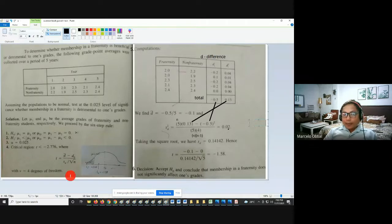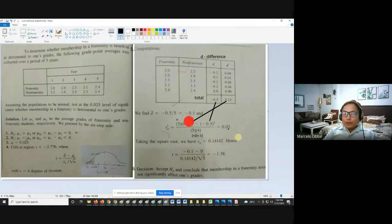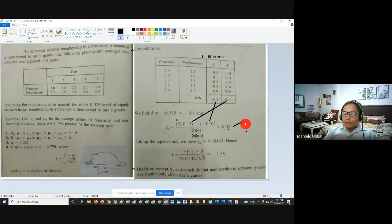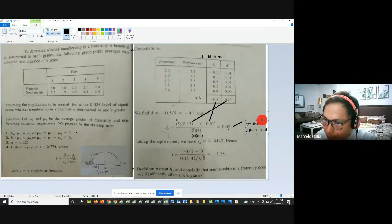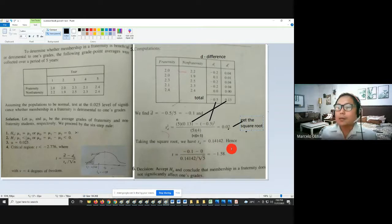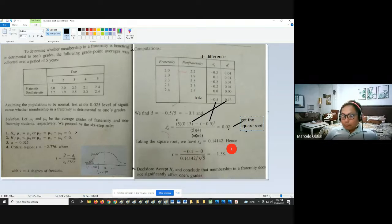Kaya lang sa formula, nakalagay S sub D lang. So, you need to get the square root. So, I will put na lang siguro a note here. Get the square root. Para maka-obtain kayo ng 0.14142. So, yun. So, after nyan, you just substitute sa formula, the answer is negative 1.58. So, balik pa rin tayo dito. You plot negative 1.58 sa graph natin. Enlarge natin, class.